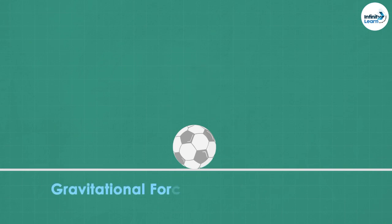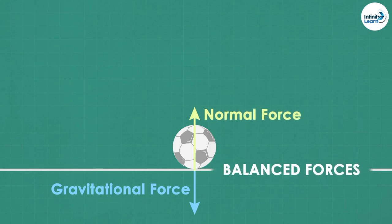And the ground is applying an equal force exactly in the opposite direction. This force is called the normal force. Because these two forces are balanced, they do not change the position of the object. The net force acting on the ball is zero.